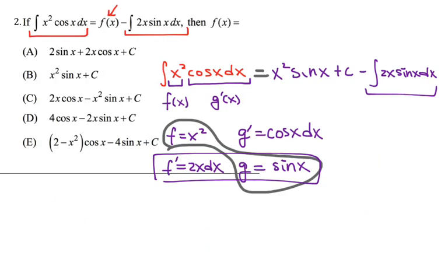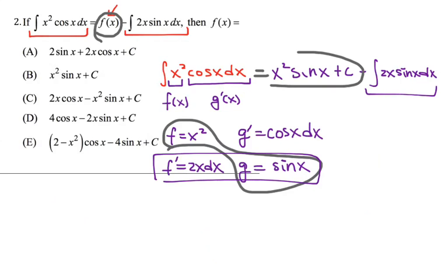When you compare what we just have done with the given expression, you will realize that in place of f of x, we have x squared sine of x, which would be a choice. P becomes our answer.